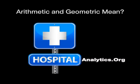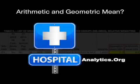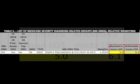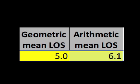It's not unusual in healthcare to see both the arithmetic and geometric mean. It's particularly useful in cases where length of stay is being calculated. Here we have a table from CMS on pneumonia with major complications, giving a geometric length of stay of 5.0 and an arithmetic mean of 6.1. The geometric mean LOS tries to control for the influence of outliers, and it's particularly useful when you have a low number of cases.